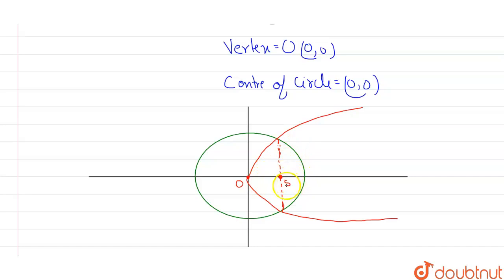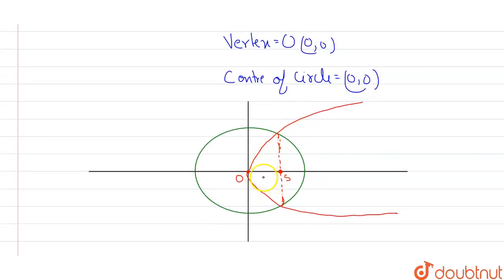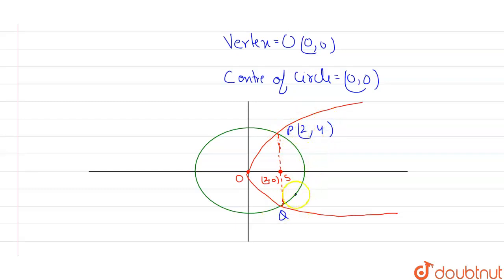The coordinates of focus S are (a, 0), and since a = 2, S is (2, 0). For the latus rectum endpoint P, the x-value remains 2, and substituting x = 2 into y² = 8x gives y = 4. Similarly, for point Q, y = −4. So P is (2, 4) and Q is (2, −4).